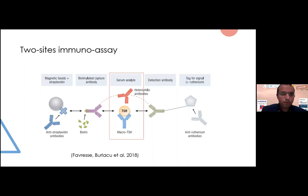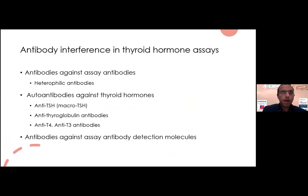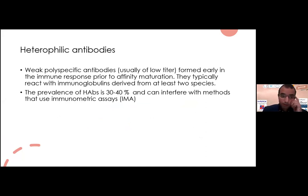Dr. Samir has shown us the two-site immunoassay, involving anti-ruthenium and anti-streptavidin. We are now more concerned with heterophilic antibodies and macro TSH. Antibody interference in thyroid hormone assays may be due to antibodies against assay antibodies, against thyroid hormones, or against assay antibody detection molecules. Heterophilic antibodies are weak, poly-specific antibodies formed early in the immune response before affinity maturation. They react with immunoglobulins derived from at least two species. The assay antibodies present in the kits are mostly animal-derived, for example from mice, so we expect them to interact with these kits.